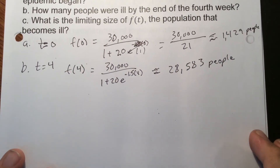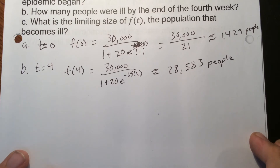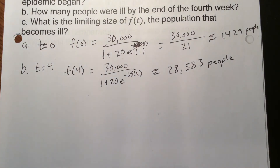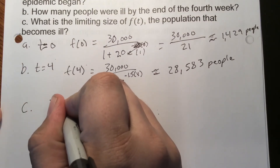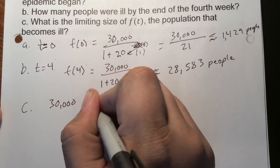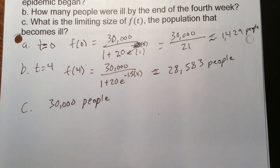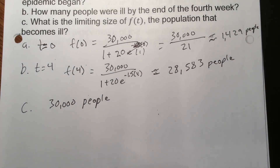Part c: what is the limiting size of the population that becomes ill? That's simply the total population of the town — 30,000 people — because you can't have more people get sick than exist. Just like with the coronavirus, we're limited by the total available population.